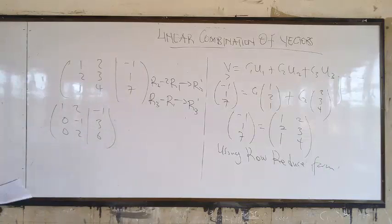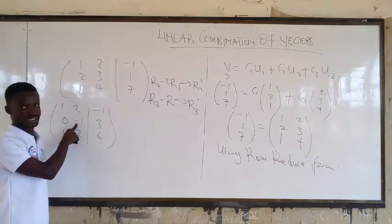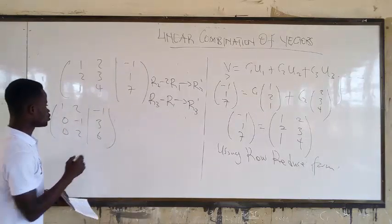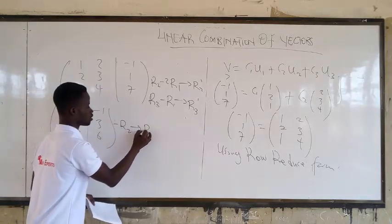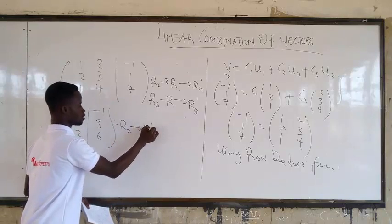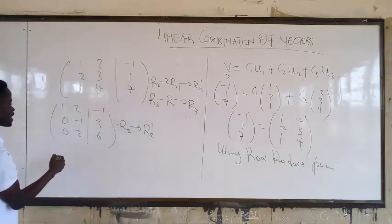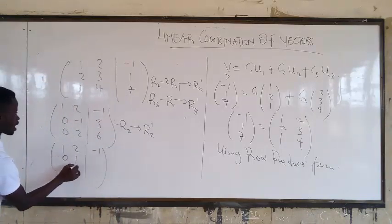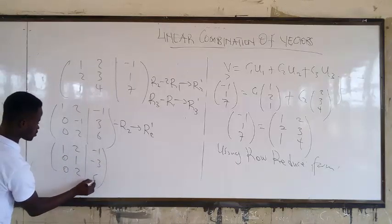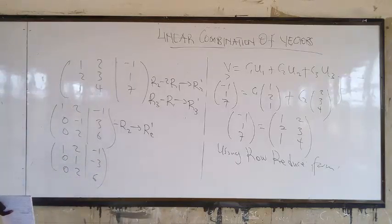So now, having this, here should be 1, not negative. So what will you do? We multiply this by negative. And now we can do 1, 2, negative 1, 0, 1, negative 3, 0, 2, 3, 6.